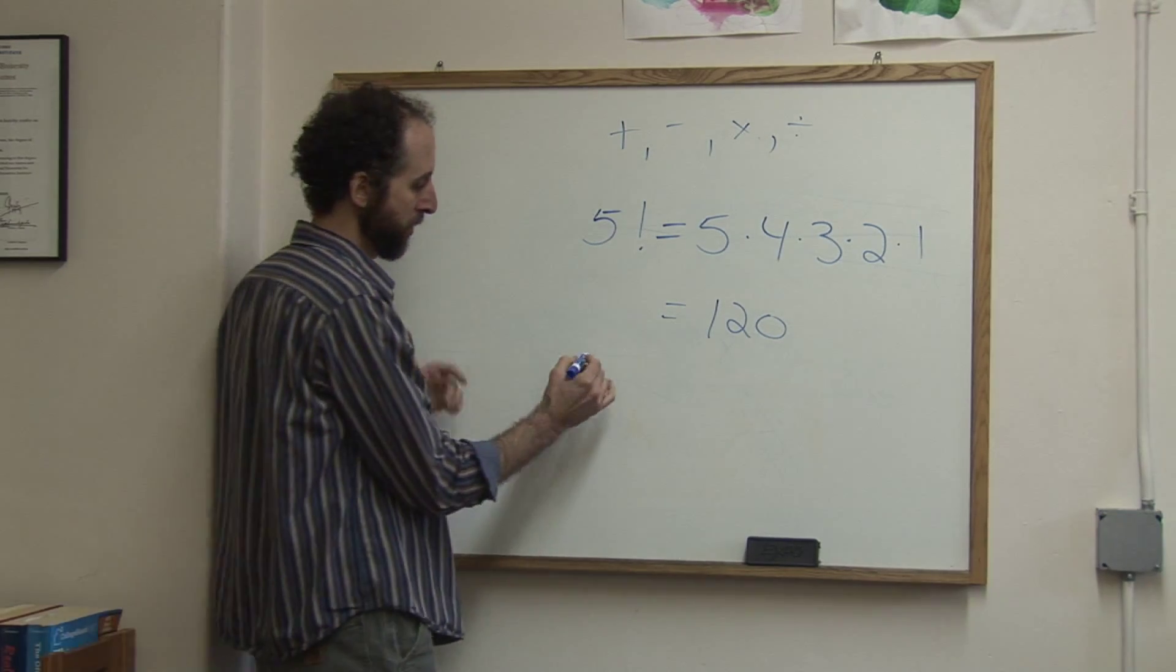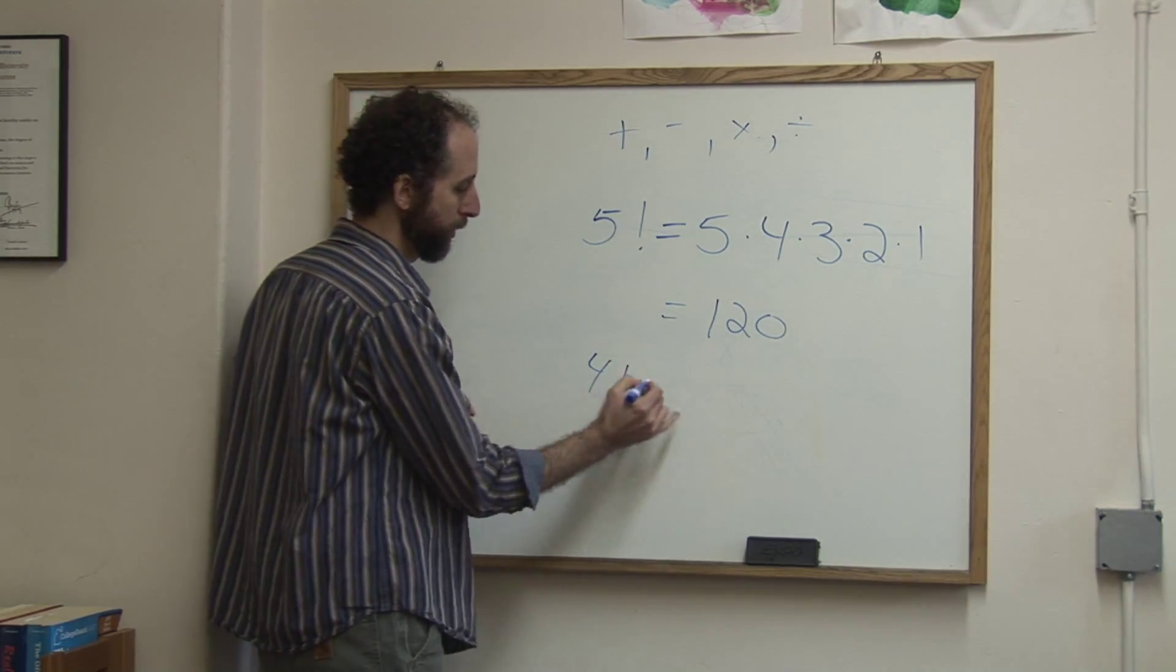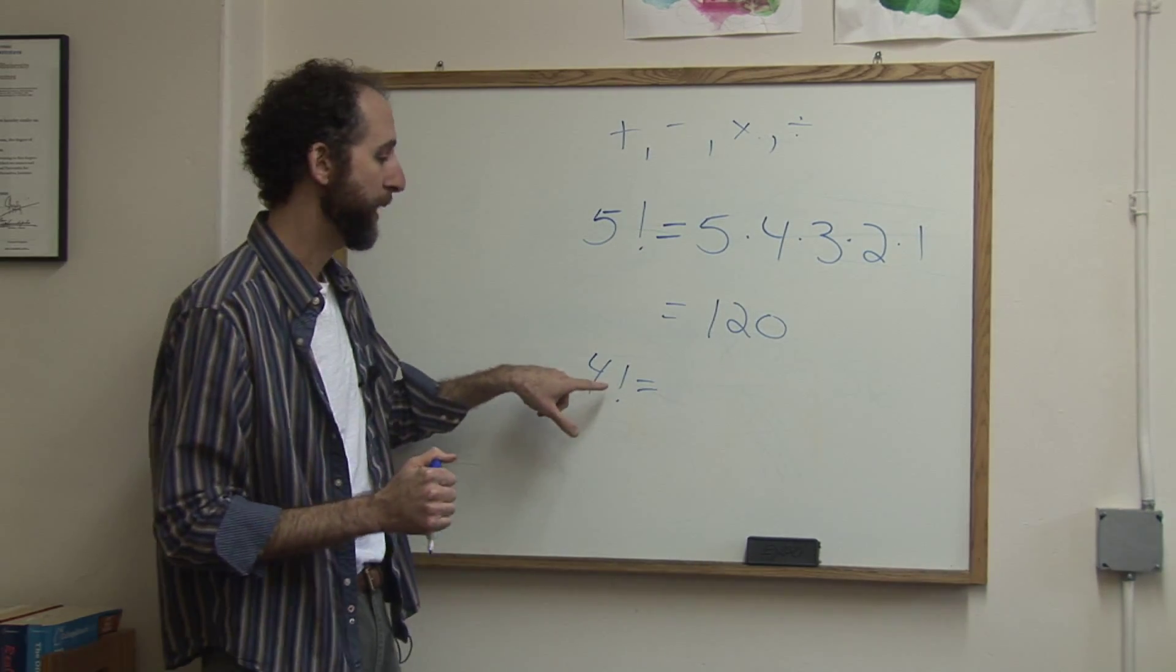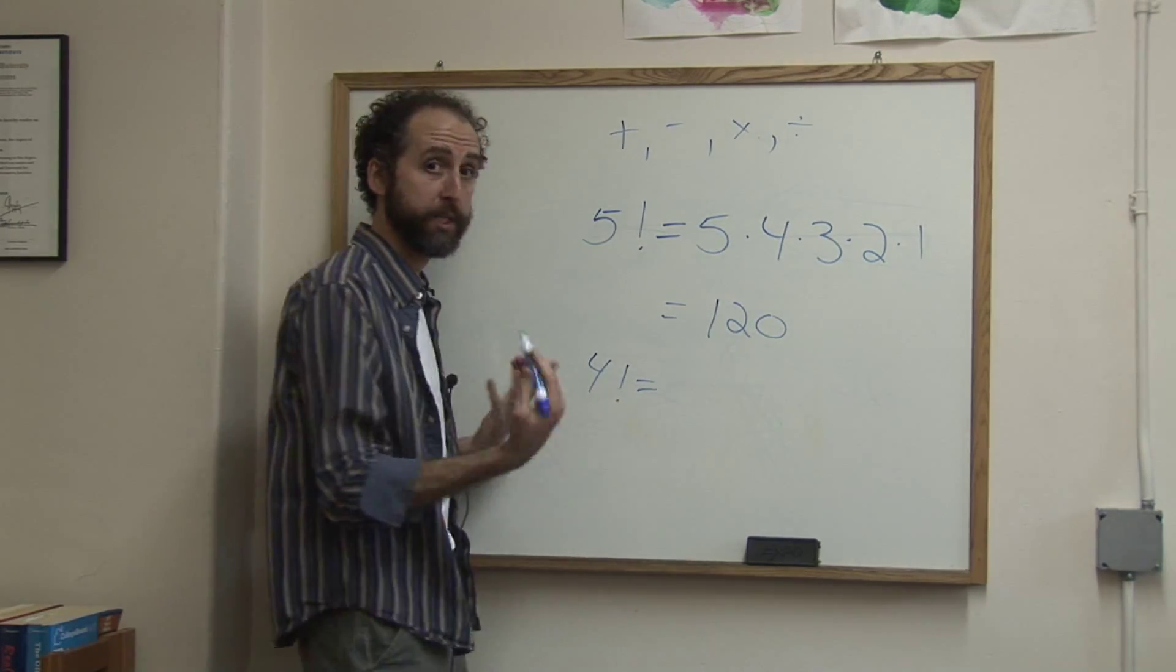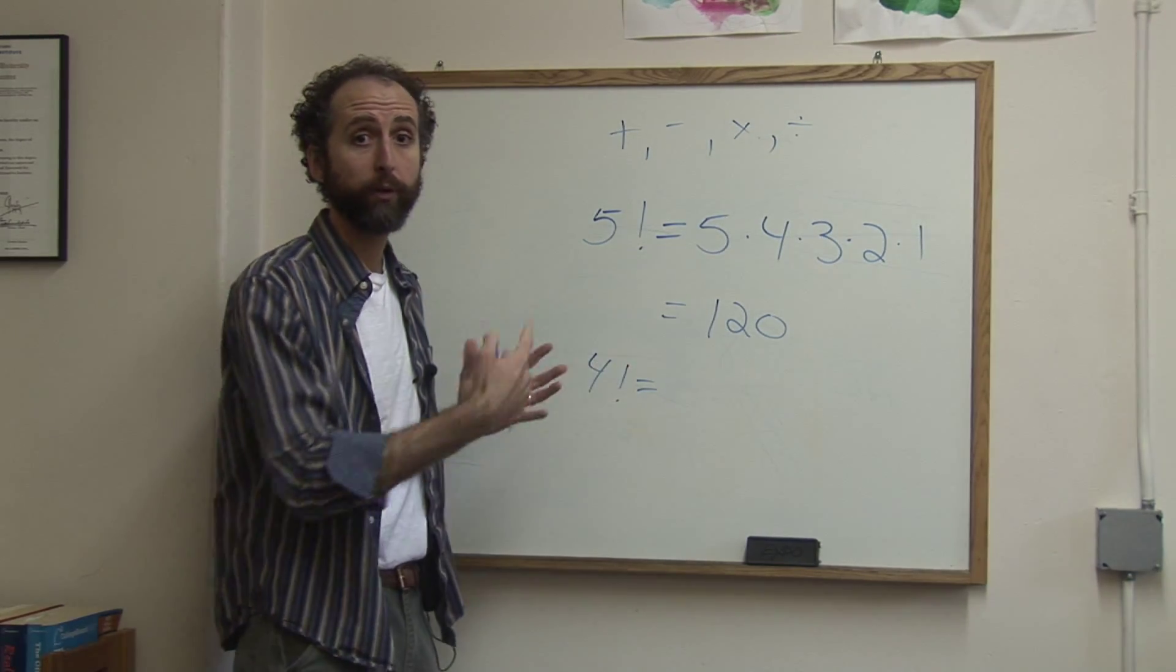Let's take a look at another one. 4 factorial. So 4 factorial means, take 4, multiply it by each positive integer below 4. So when I say positive, I say that because we're not going to go into the negatives.